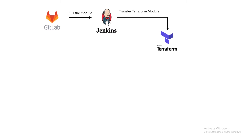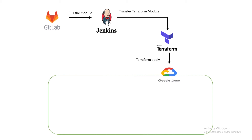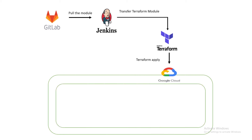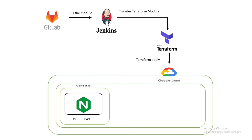The Terraform module has instructions to provision a GCP public instance for the web server, a private instance for the app server, another private instance for the database, compute zone, disk, network, address, and a firewall.